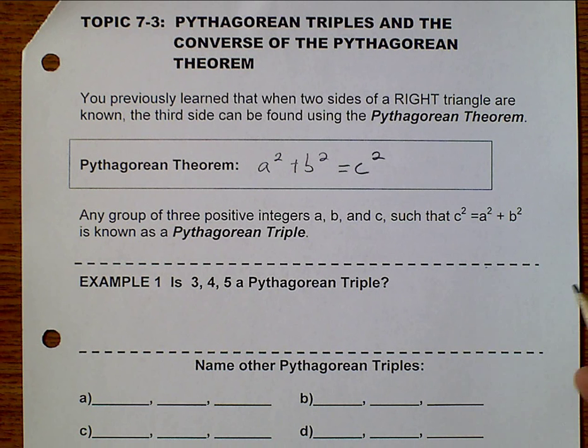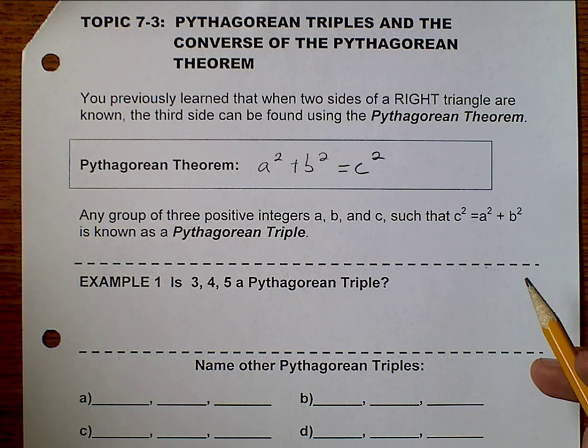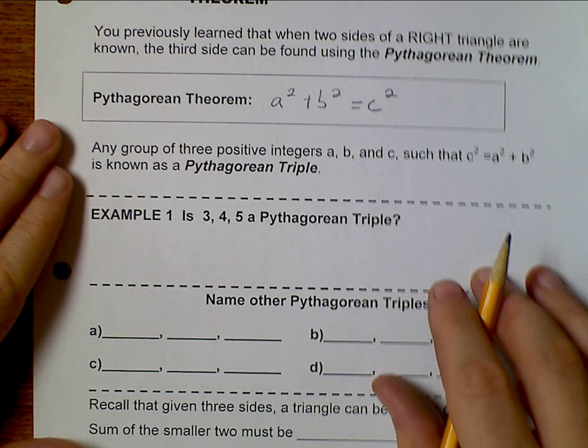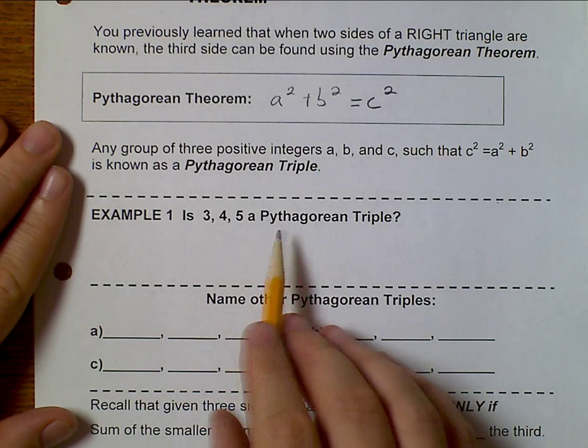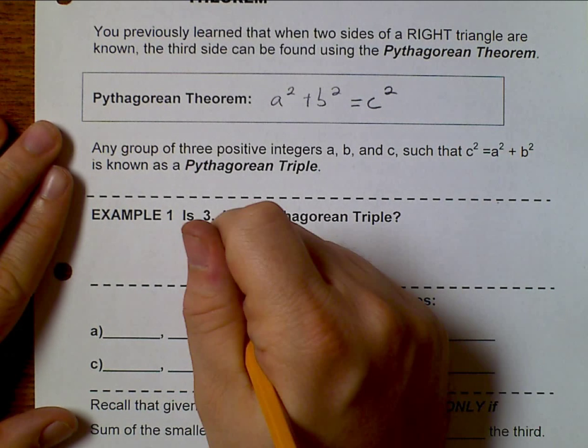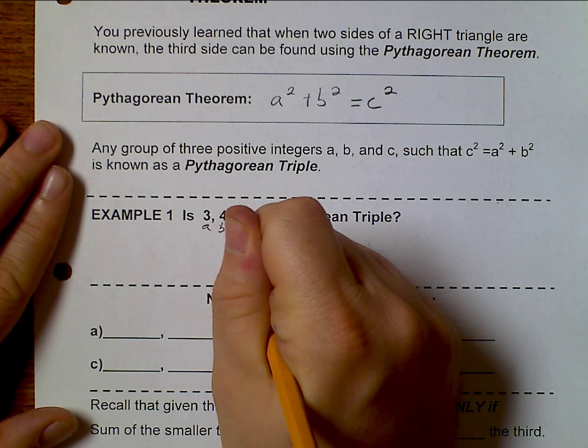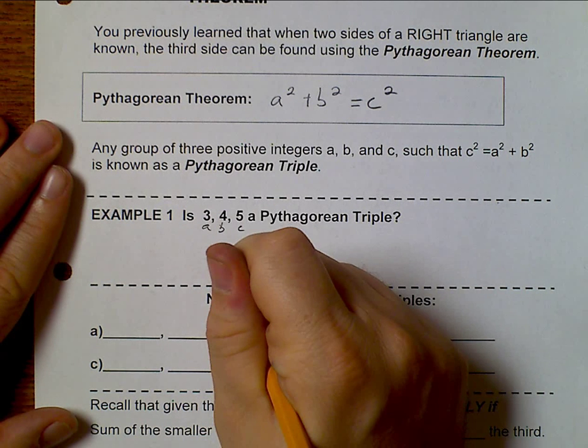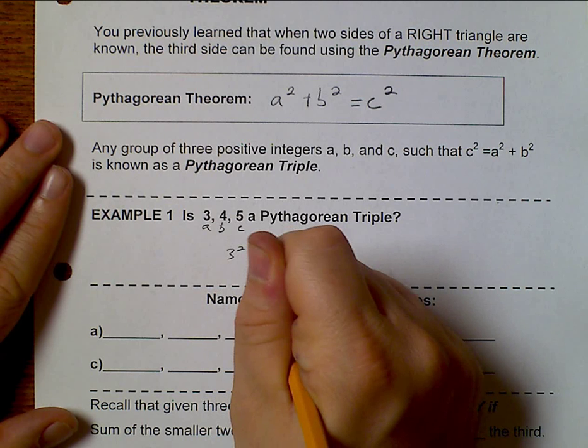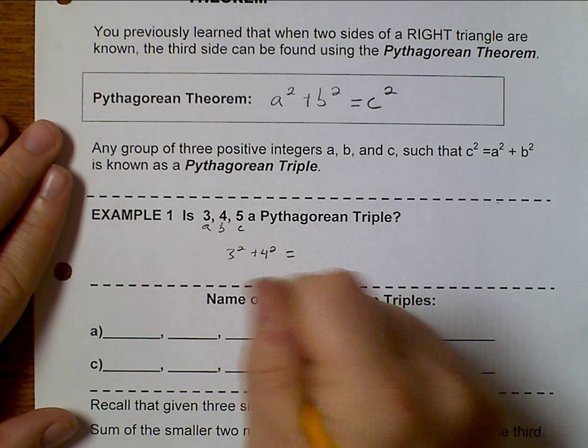And we can determine if they're a Pythagorean Triple by seeing if it works. So the question, is this a Pythagorean Triple? Well, this would be a, b, and c. So let's try 3 squared plus 4 squared. And then we'll try 5 squared.